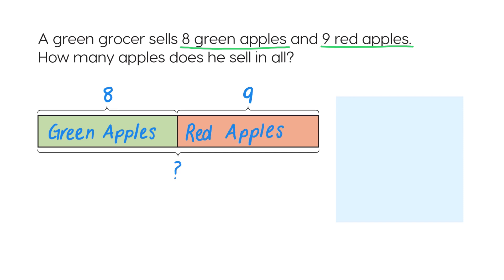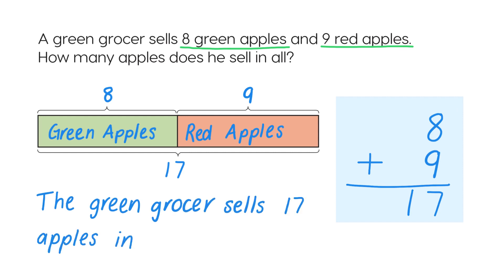To find the total number of apples he sold, we add. 8 plus 9 is 17. So the green grocer sells 17 apples in all.